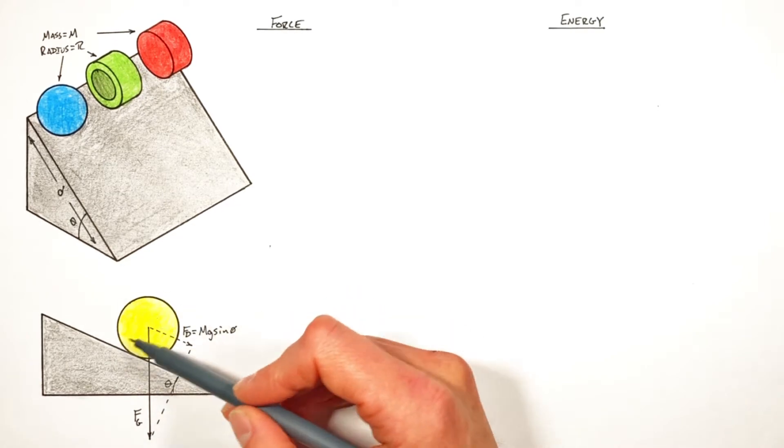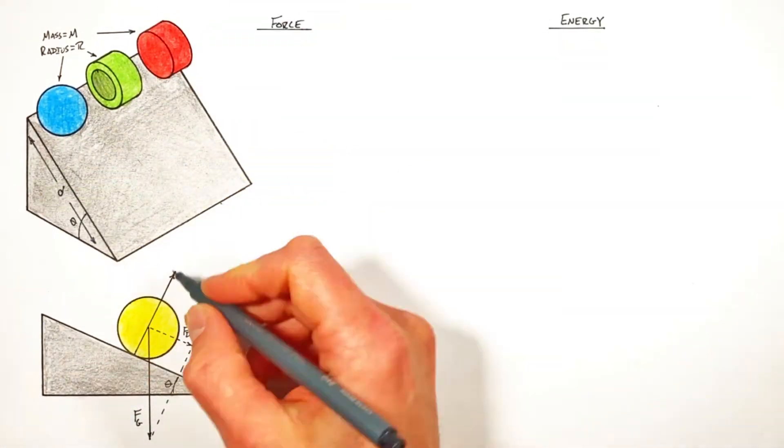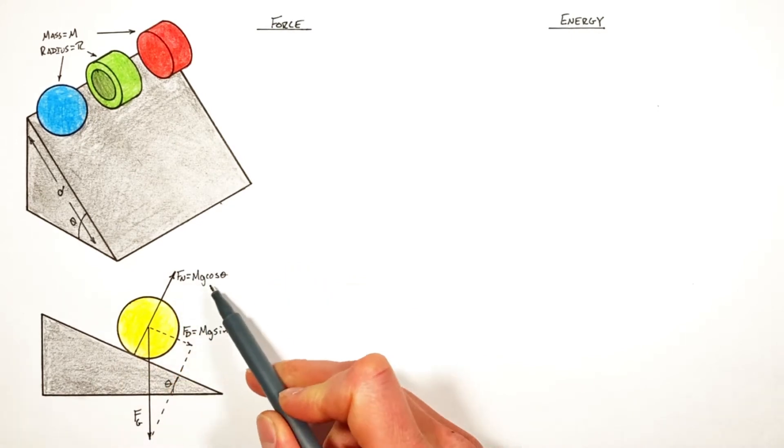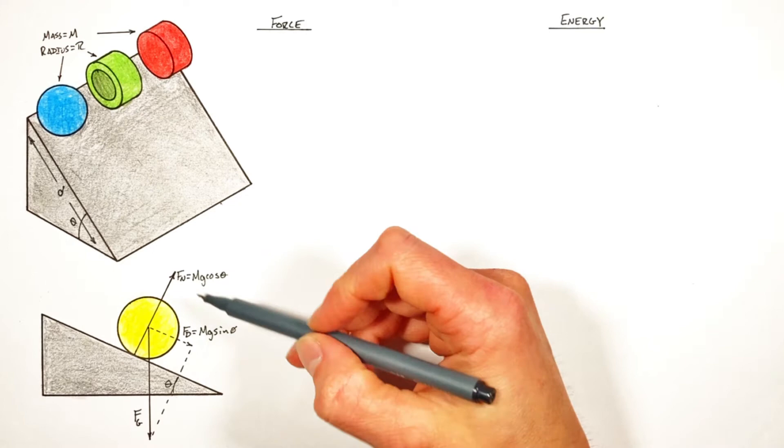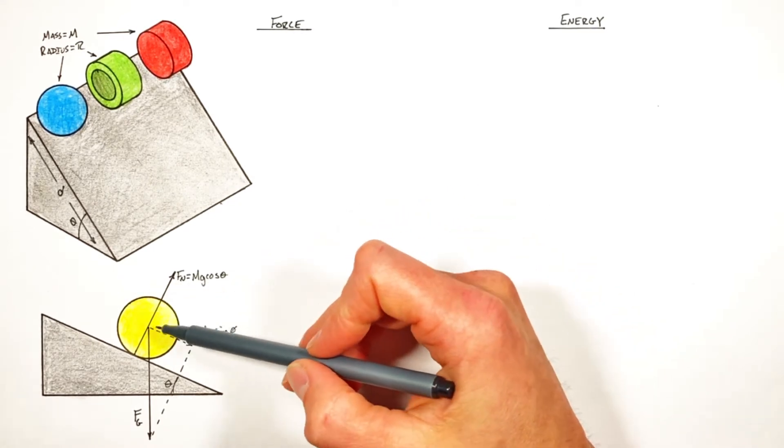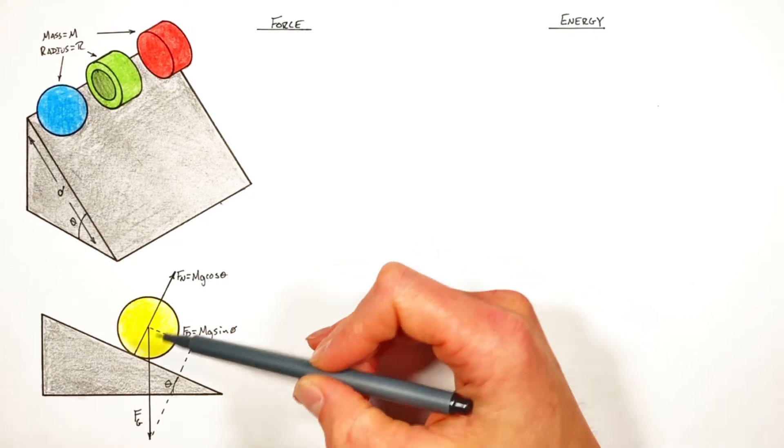Next, there's a normal force that's keeping the ball from just falling straight through the hill. And that normal force is given by mg cosine theta. Now if we were to stop right here, what we would effectively have is nothing other than a block sliding down a hill or a ball sliding down a hill. It wouldn't be rolling.